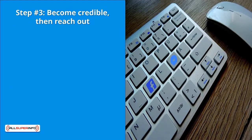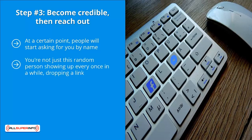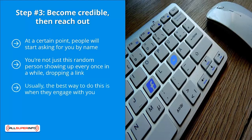Step number three: become credible, then reach out. At a certain point, people will start asking for you by name and reaching out via Messenger — that's when you know you have become an asset to these groups and are on people's radars. You're no longer some random person dropping a link; you're the person that helps keep these groups together. This is when you reach out to the group admin, ideally when they engage with you first — when they mention your name or send you a message.